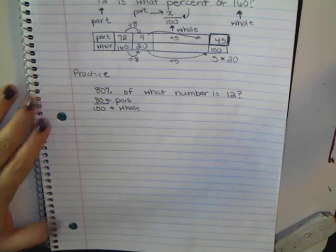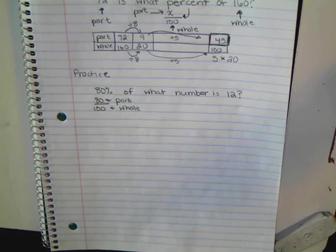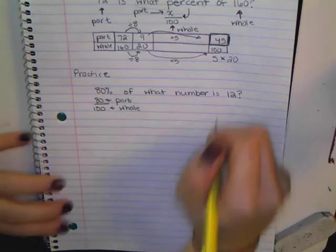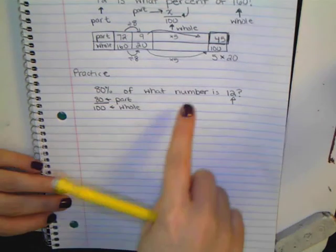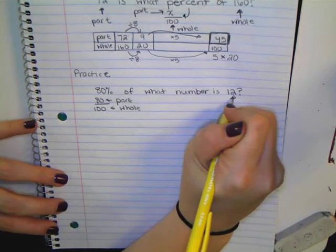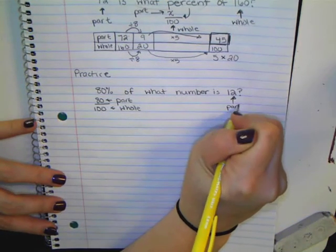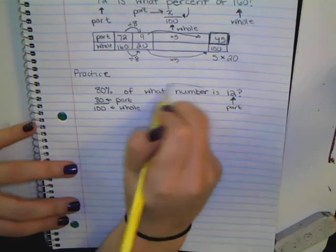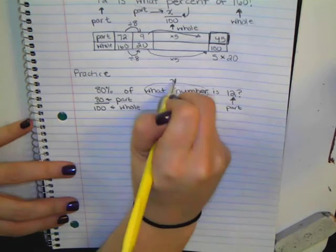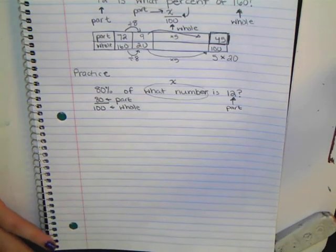So I have 80 as a part, 100 as a whole. What else do I have? So 80% of what number is 12, so 12 is my part. Good. So that means my what number that I'm looking for is a part or a whole. Which one? A whole.